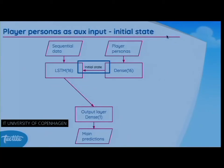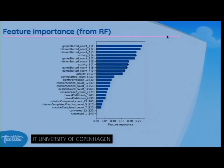When we flatten the data and apply a random forest classifier, we can extract feature importance as a sanity check. Activity in the last part of the observation period matters most — consistent with literature showing that behavior immediately leading up to churn has the biggest impact. Least important is whether a player converted or not. Features from the early part of the observation period are also less important.